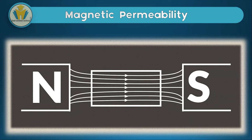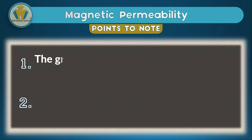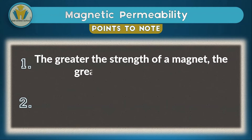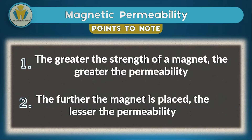The deeper details of magnetic permeability, such as calculations involving absolute permeability and relative permeability, are not required under the HZ syllabus, so don't worry about those. There are two key points to note: first, the greater the strength of the magnet being used, the greater the permeability a magnetic material may show. Second, the further the magnet is from the magnetic material, the less likely permeability will occur — if the material is outside the external magnetic field entirely, no magnetic permeability will be observed.